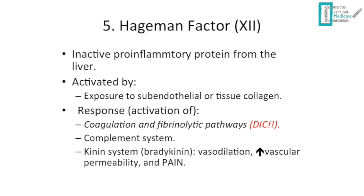The last mediator is Hageman factor (factor XII) from the coagulation pathway. It is an inactive pro-inflammatory protein produced by the liver, activated by exposure to subendothelial or tissue collagen during tissue injury. Importantly, it is associated with DIC (disseminated intravascular coagulation), commonly seen with gram-negative sepsis — this is high-yield for exams.